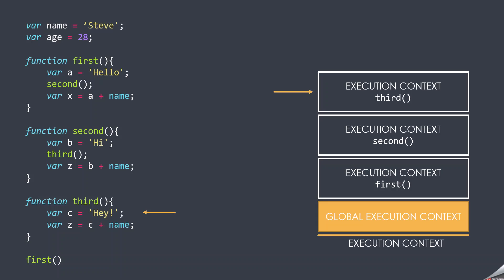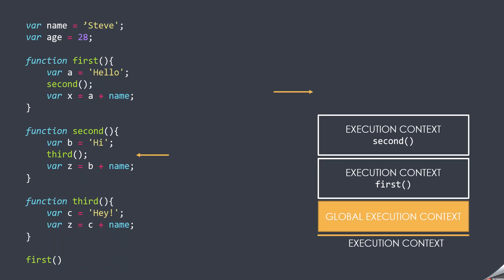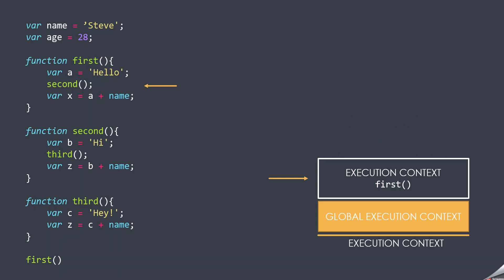Inside the second function, we are declaring variable B, so B will be stored in the execution context of the second function. Then we are calling the third function from within the second function, so another execution context will be created for the third function, and it becomes the active execution context. Inside this function, we are declaring two variables C and Z, so these two variables will be stored in the execution context of the third function. Then this function returns, and once the function returns, the execution context of that function gets popped off from the execution stack.